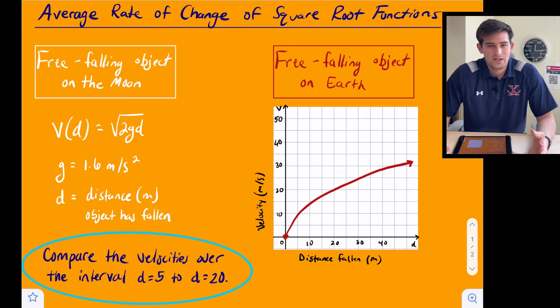The reason it's average rate of change is we know these are square root functions, which are radical functions, which are non-linear functions. So the rate of change is not constant, but we can use average rate of change to get a pretty good idea of the behavior of this graph, especially over a certain interval.